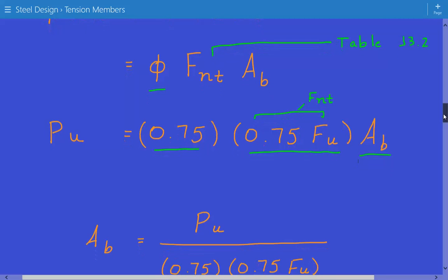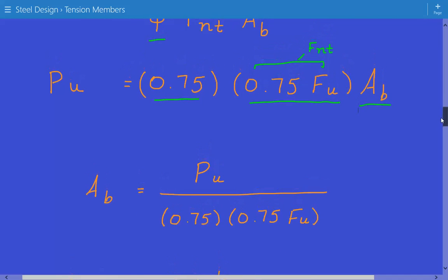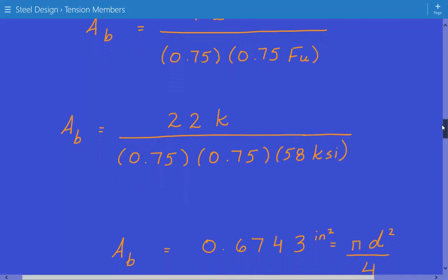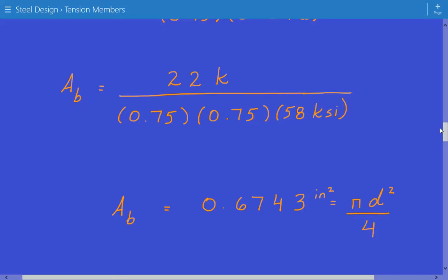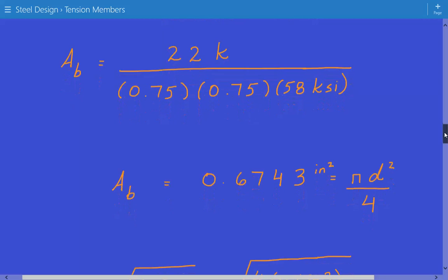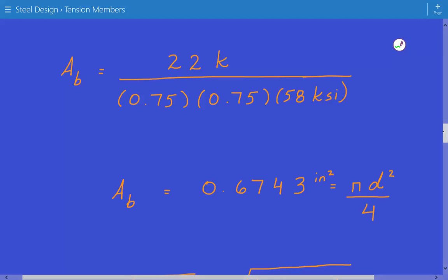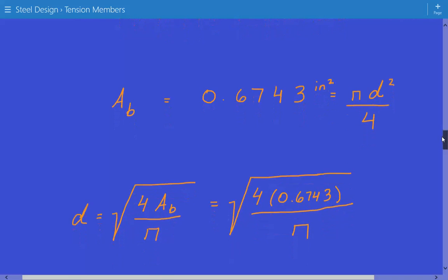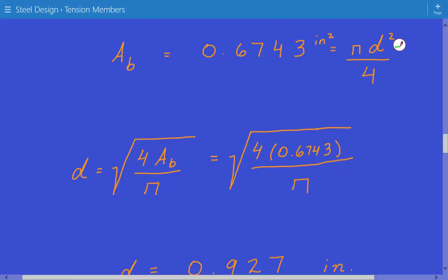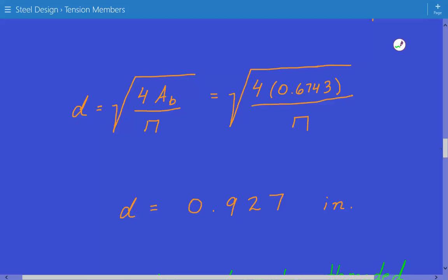We're solving for Ab, the cross-sectional area, so we rearrange this equation. The required cross-sectional area is equal to the factored load divided by 0.75 times 0.75 times the ultimate tensile strength. Plugging in the numbers, we find that the required cross-sectional area is equal to 0.6743 inches squared. The cross-sectional area is also equal to pi d squared over 4. Using this relationship, we can calculate the diameter. The diameter is equal to the square root of 4 times the cross-sectional area divided by pi.